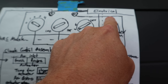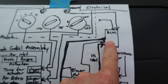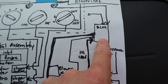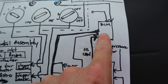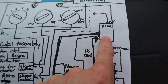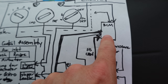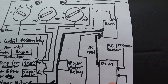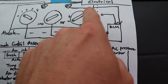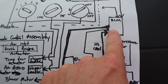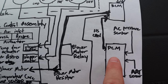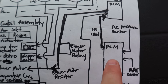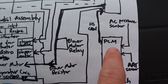When you press the AC button, an AC request signal is sent to the BCM — the body control module. The BCM controls and monitors certain accessories on the body of the vehicle and acts as a communication gateway. The AC request signal is relayed from the BCM to the PCM — the powertrain control module.